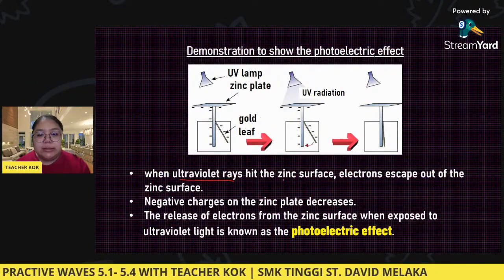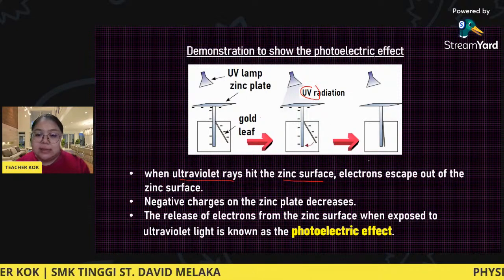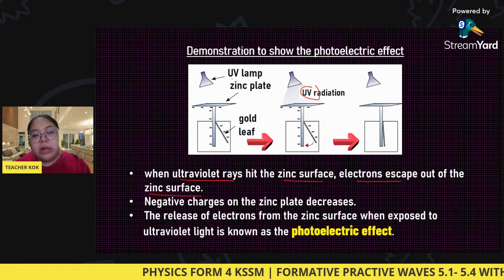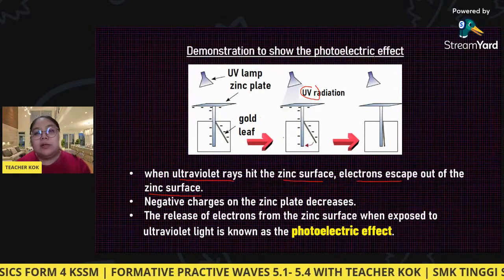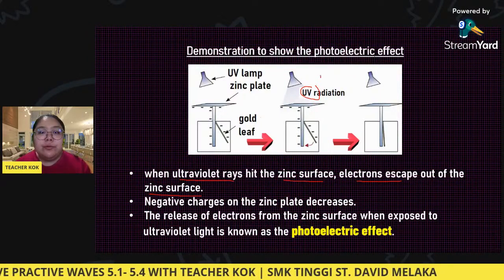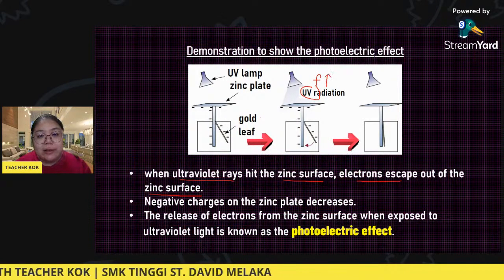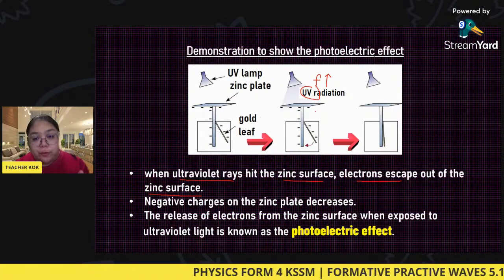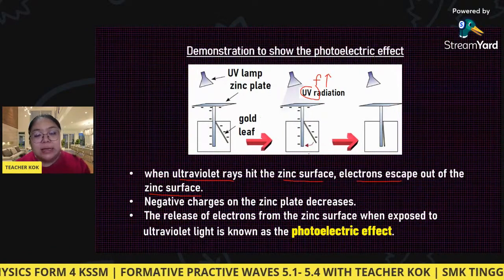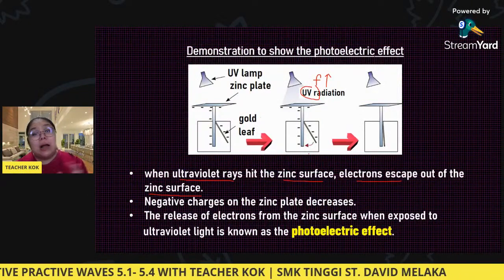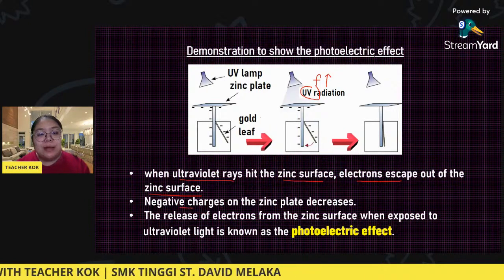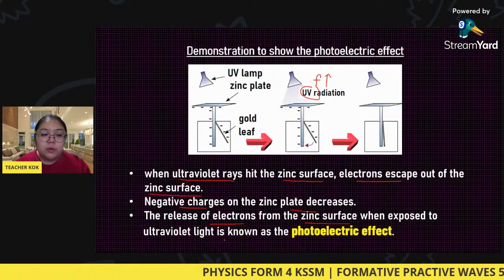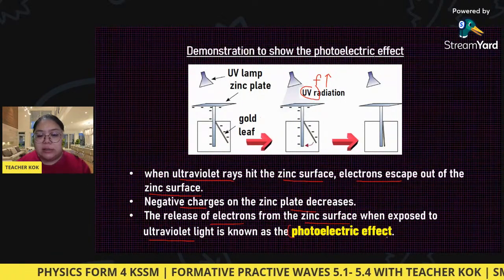When the ultraviolet ray hits the zinc surface, electrons escape from the zinc surface. Without a UV lamp, the electrons cannot come out. When you point UV radiation — which has a high frequency — at the zinc surface, the electrons can come out. This process we call photoelectric effects. The negative charge on the zinc plate decreases because electrons have already come out. The release of electrons from the zinc surface when exposed to UV light is called the photoelectric effect.